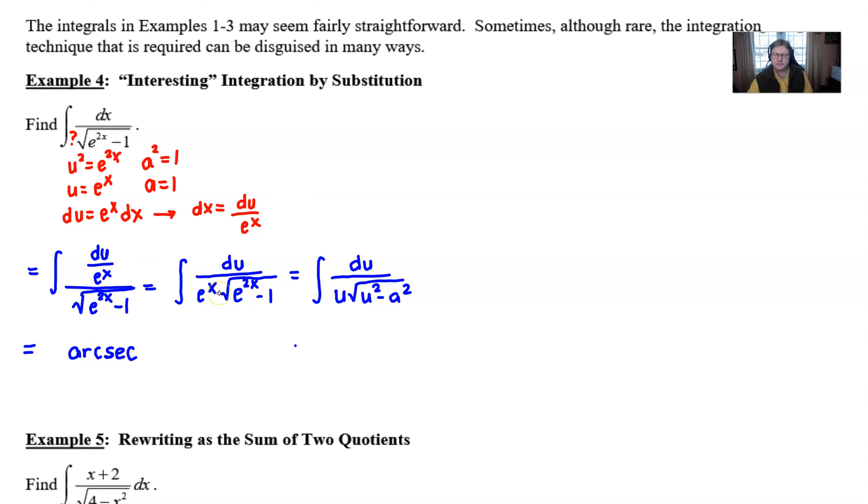Right, 1 over 1 times the arc secant of the absolute value of u over 1 plus C. Well if I just simply clean this up and then back substitute my u, which is e to the x.